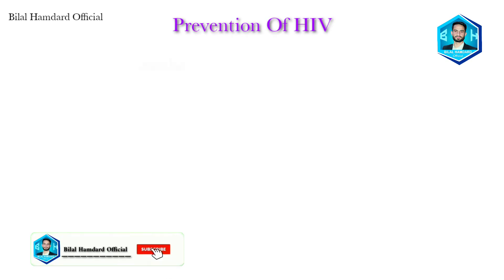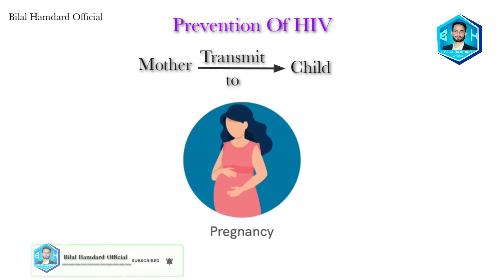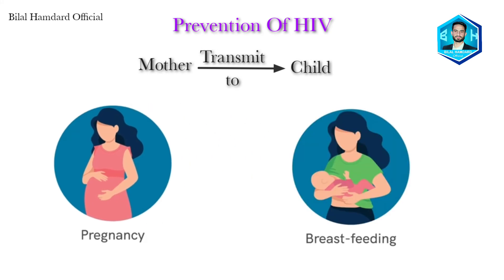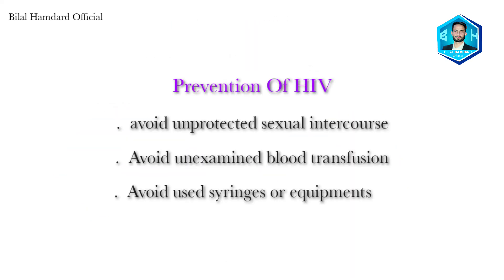HIV can also easily pass from a mother to her child during pregnancy, delivery, or through breastfeeding. Therefore, proper medications and measures to prevent the transmission of HIV to the child should be carried out. These are a few methods by which transmission of HIV infection can be prevented.